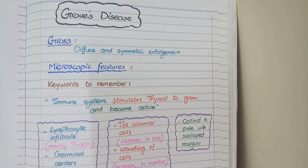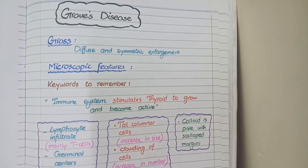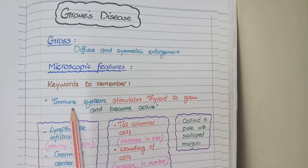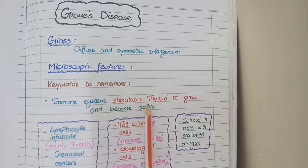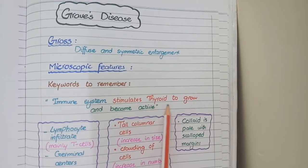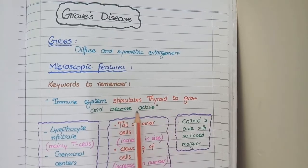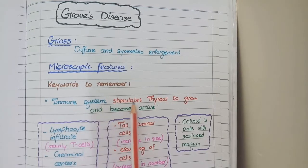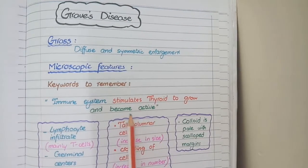For the microscopic features of Graves' disease, the keywords to remember are: the immune system stimulates the thyroid to grow and become active. This is the pathophysiology behind this disease.